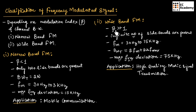In wide band FM, the value of modulation index will be greater than 1. There will be an infinite number of side bands present. The message signal frequency will range between 30 Hz to 15 kHz. The transmission channel bandwidth is calculated using the formula 2Fm plus 2ΔF maximum. The maximum frequency deviation will be equal to 75 kHz, and the application is high quality music signal transmission.